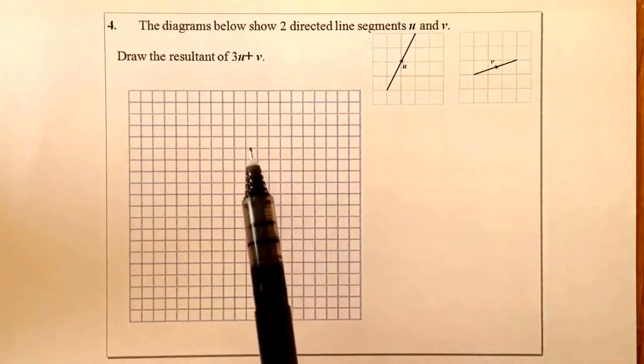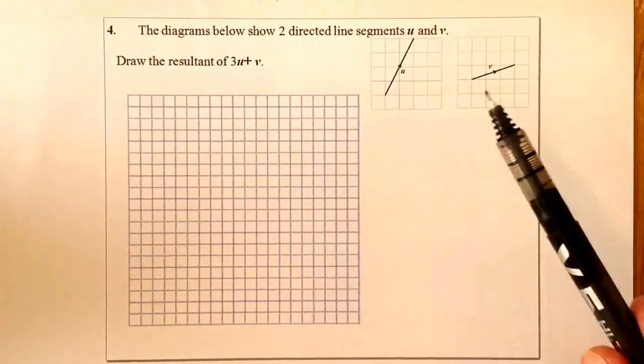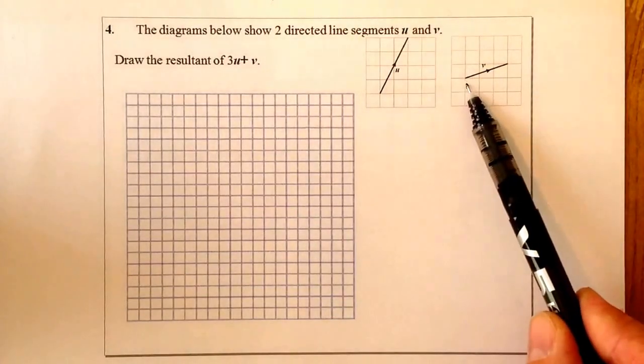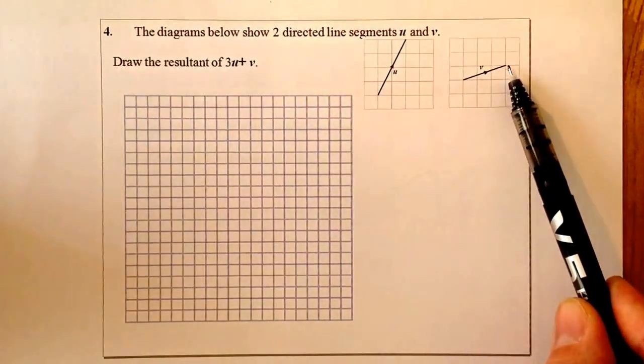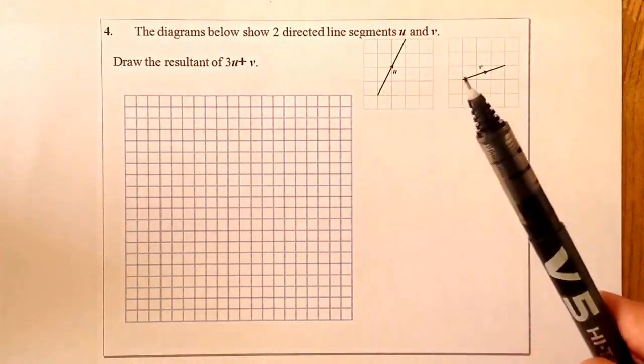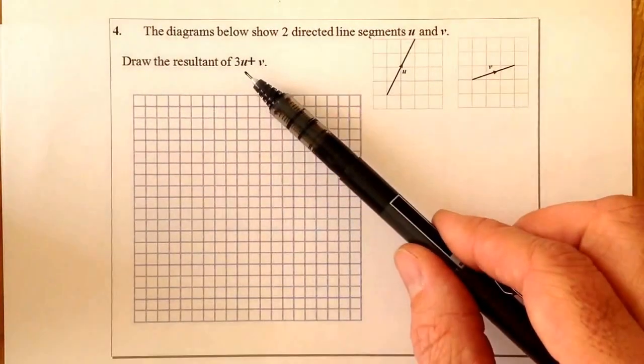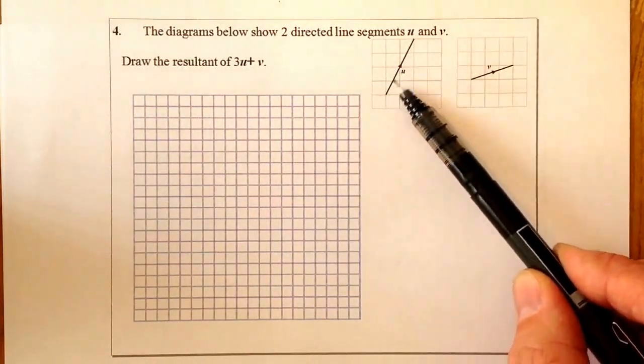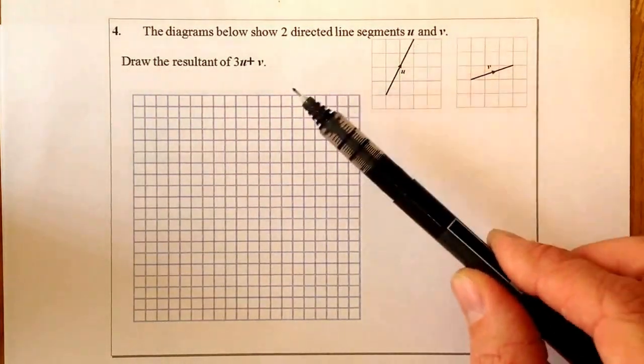What we've got is a diagram below that shows two direct line segments. So I've got u here, which goes along two and up four. And I've got v, which goes along three and up one. So draw the resultant of 3u plus v. Now, 3u is going to be the same direction as u, but it's going to be three times bigger.